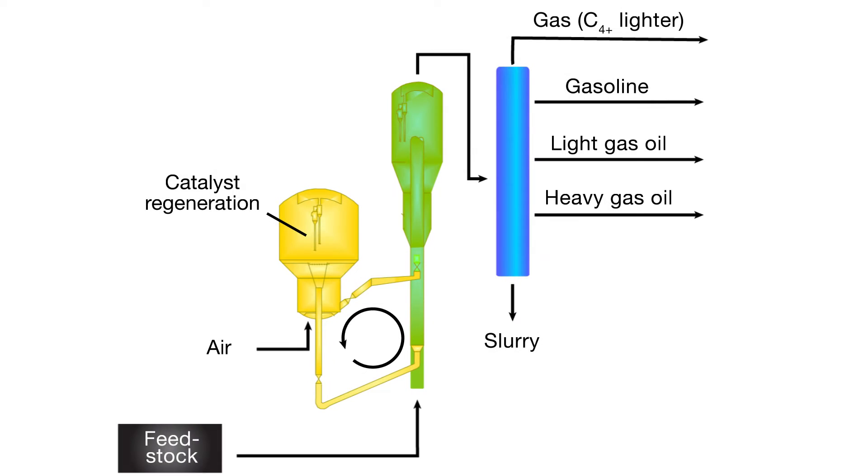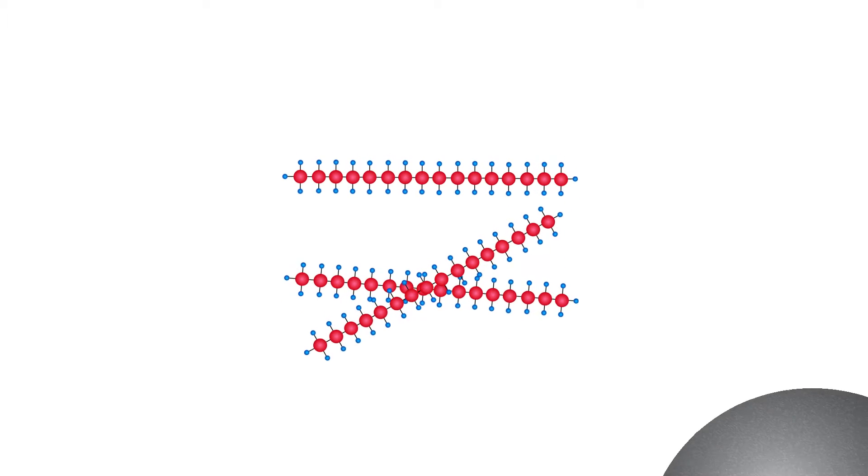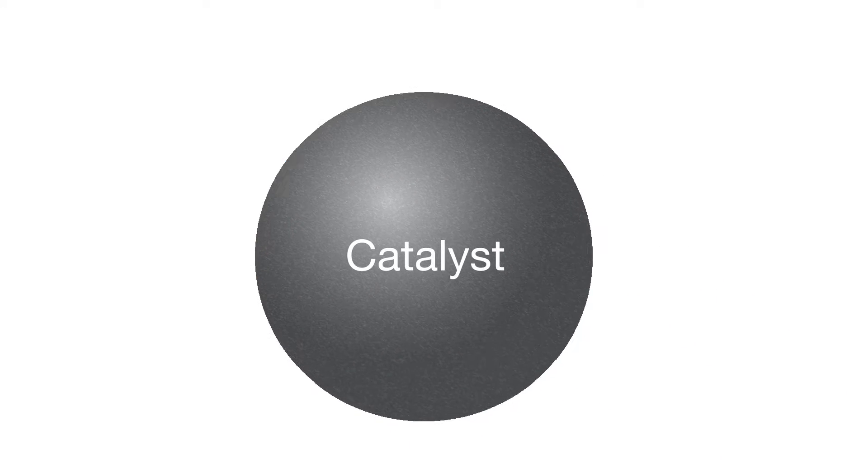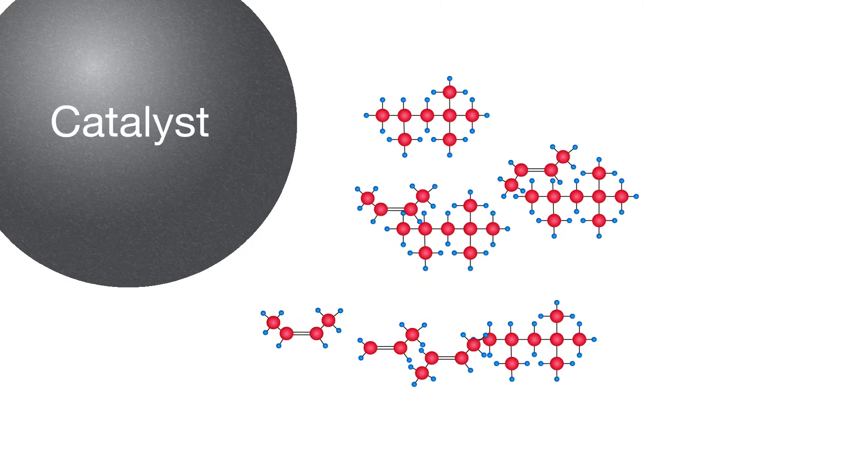The most adverse effects of iron contamination occur during a principal conversion step in the oil refining process called fluid catalytic cracking, or FCC. In FCC, large hydrocarbon molecules in the crudest forms of oil are broken down or cracked by a catalyst into smaller, more useful molecules.